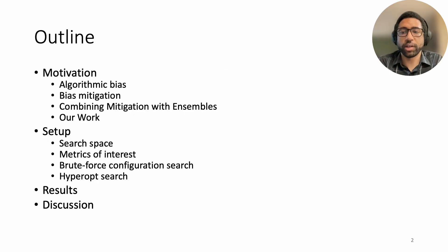I'll first go over the motivation for our work by reviewing examples of algorithmic bias, introducing current approaches to bias mitigation, and arguing how ensemble learning may improve mitigation techniques. Then I'll explain our experimental setup, specifically the mitigation and ensemble approaches considered, as well as the two types of model configuration search we conducted. Lastly, I'll summarize our results and conclude with a discussion and interpretation of those findings.